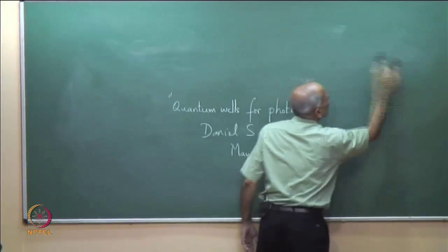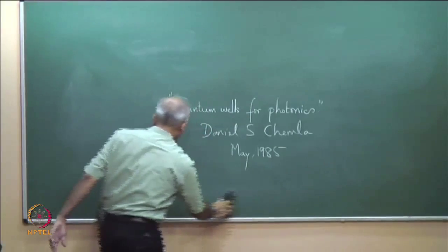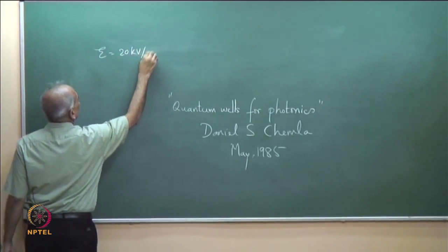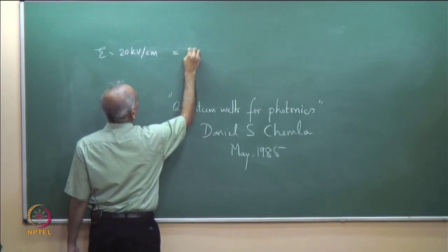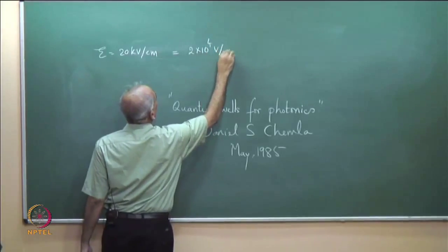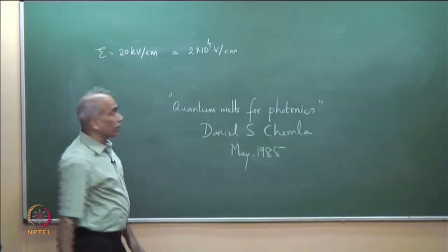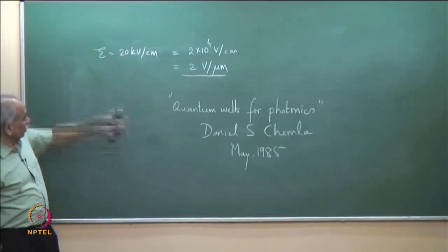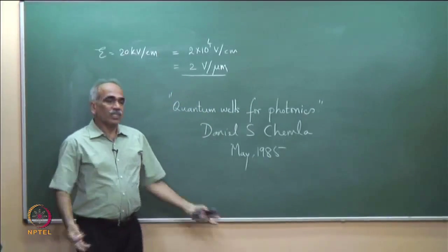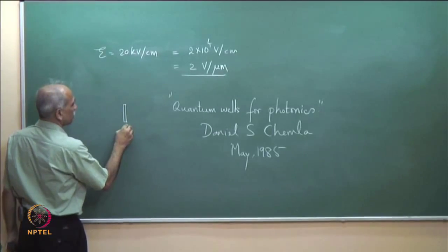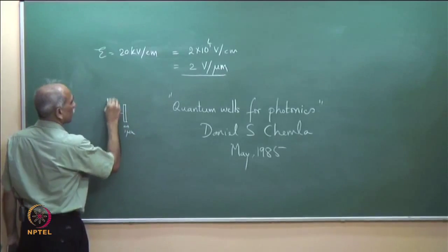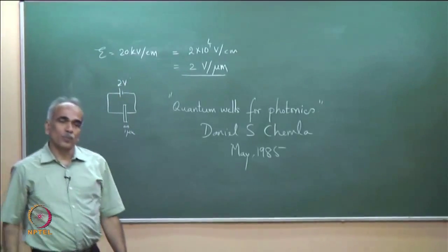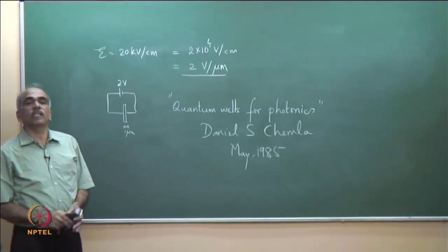The question is how to apply a large electric field like 10^5 V/cm or 20 kV/cm. E = 20 kV/cm equals 2×10^4 V/cm. Since 1 cm = 10^4 micrometers, that equals 2 volts per micrometer. So if you can apply 2 volts across 1 micrometer thickness, you get the required field. It is not a big challenge — it is 2 volts across a small thickness.